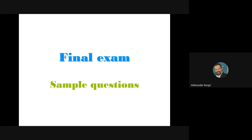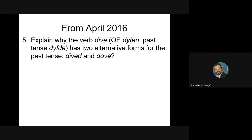Now, as I always do, I've prepared some examples from the final exam — from April, four years ago. The question was: explain why the verb 'dive' (Old English dīvan, past tense dīvde) has two alternative forms for the past tense — 'dived' and 'dove.' What would you say? The key word here is analogy. Just writing 'this is an example of analogical change' already gives you at least two or three points, even if you don't write anything else.